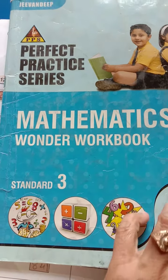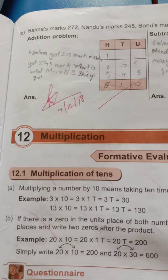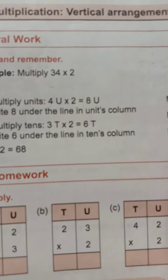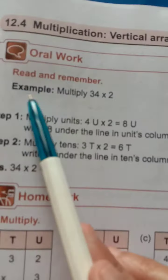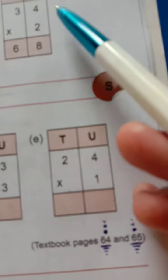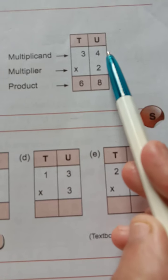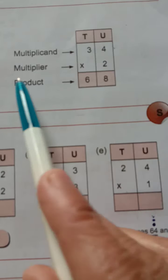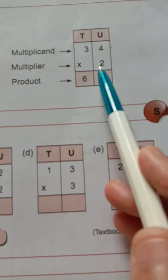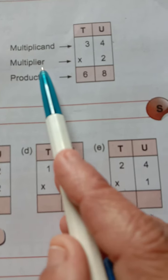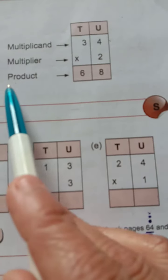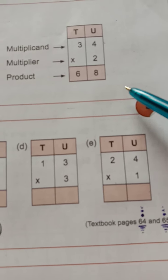Welcome back to our maths period. Let's start our chapter, that is multiplication — chapter number 12, multiplication. Today we are going to learn multiplication by vertical arrangement.